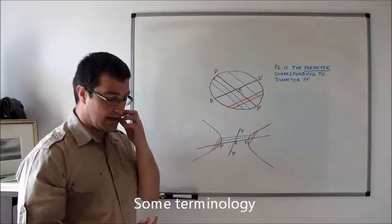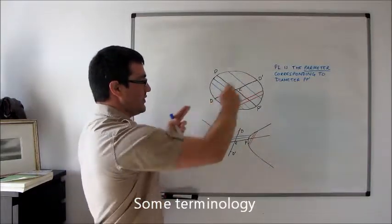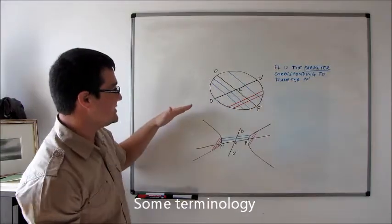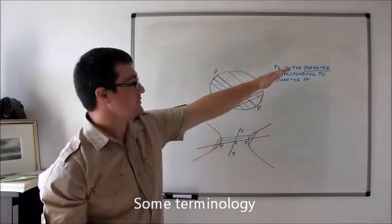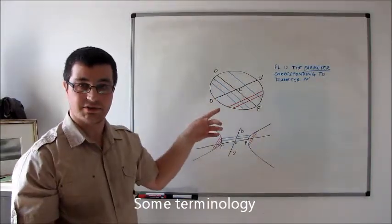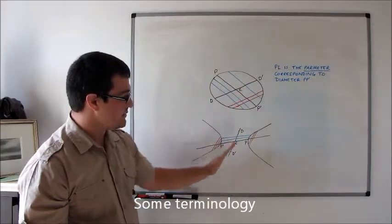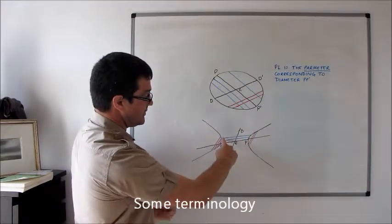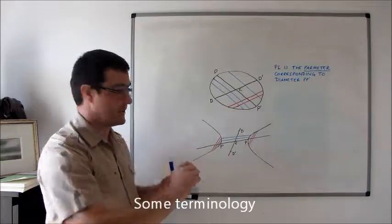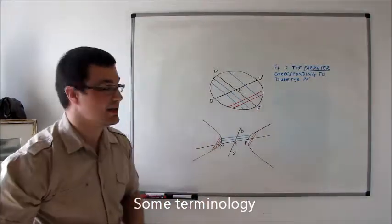In the case of the ellipse, it doesn't really make sense to extend DD' beyond the circumference of the ellipse, because there are no chords there for it to bisect. But in the case of the hyperbola that's definitely necessary, because all of our chords joining two points on opposite branches of the hyperbola go all the way up and all the way down, so we're going to need to extend DD' indefinitely.